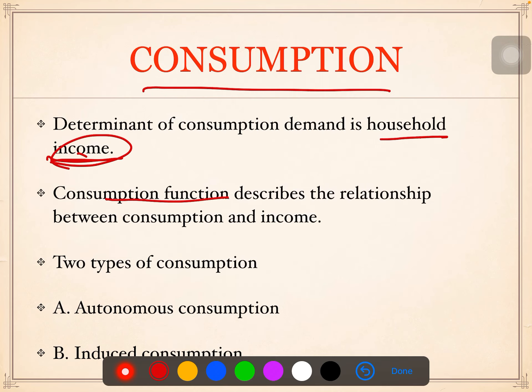The consumption function is about the relationship between consumption and income. When income increases, consumption also increases; when income decreases, consumption also decreases. For example, if my income increased from 300 to 500 rupees, I'm going to purchase more goods. If income decreases — say due to a pandemic — consumption also gets reduced. So income and consumption have a positive relationship.